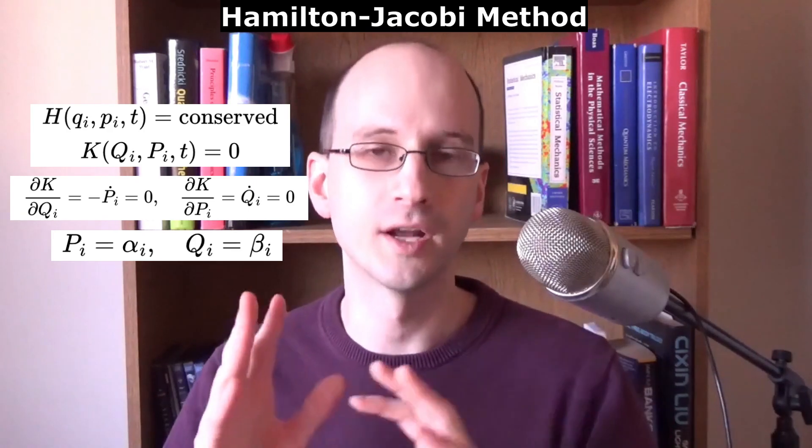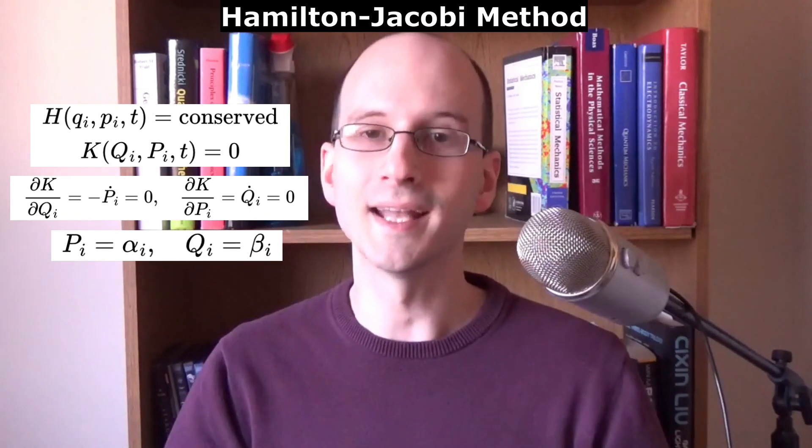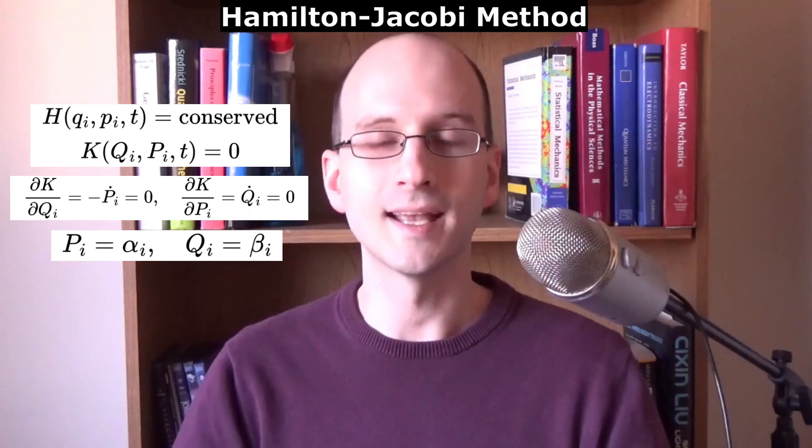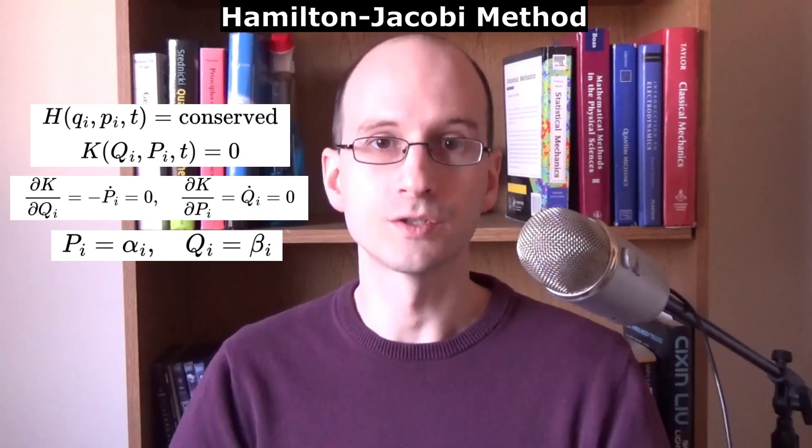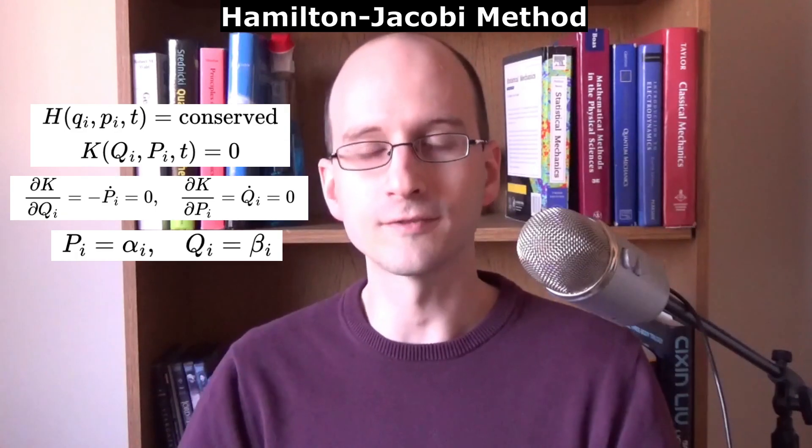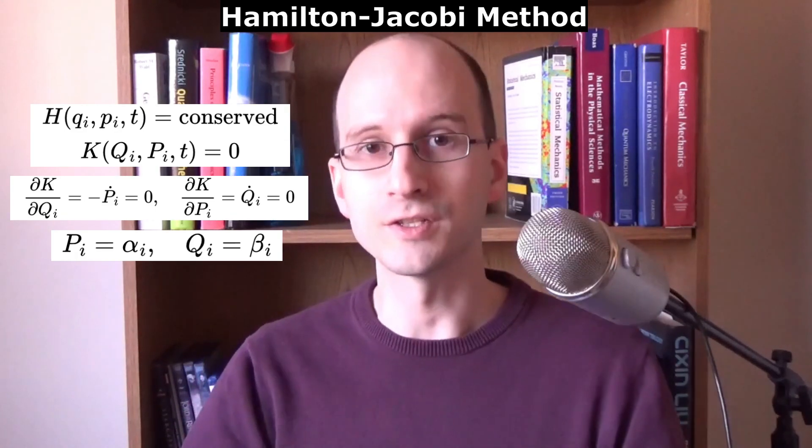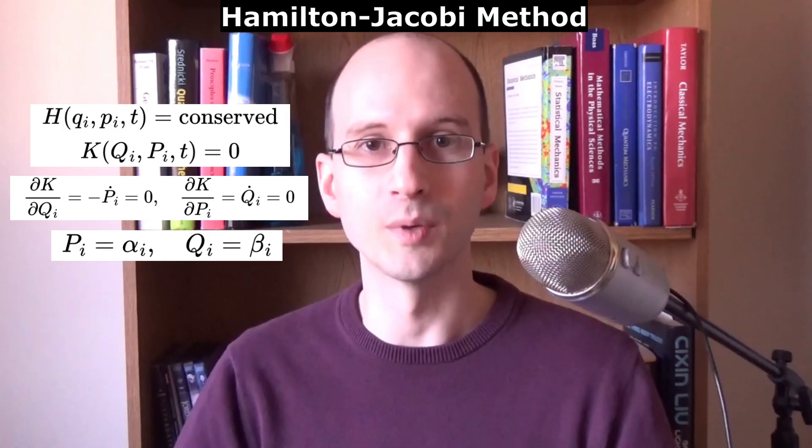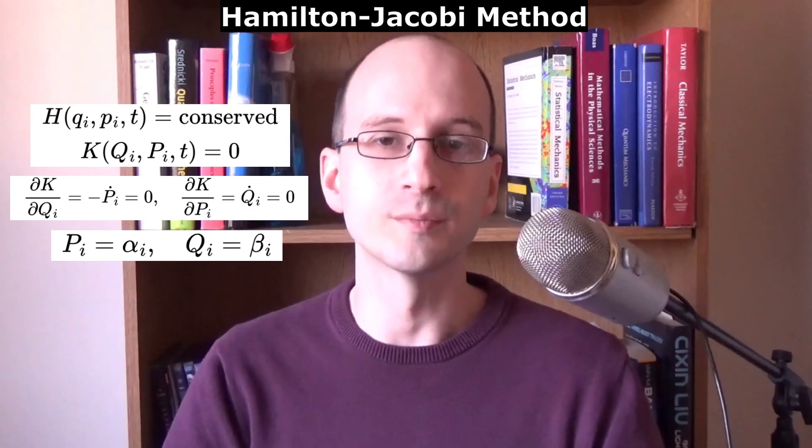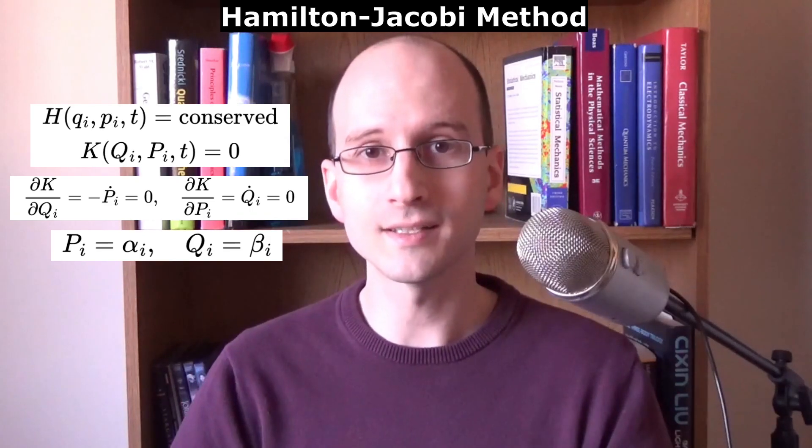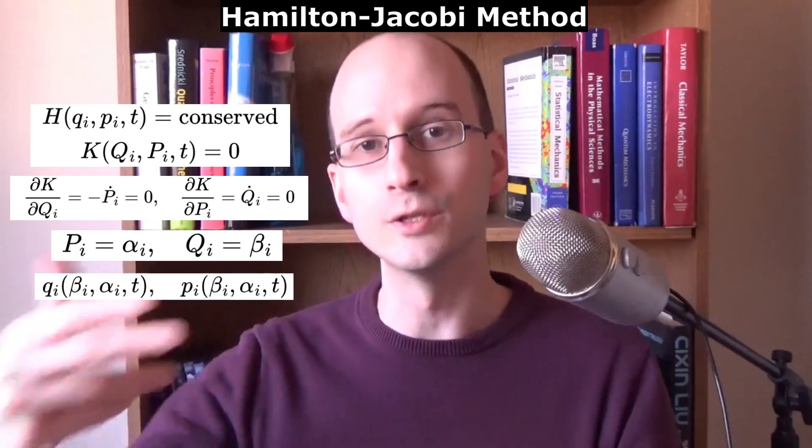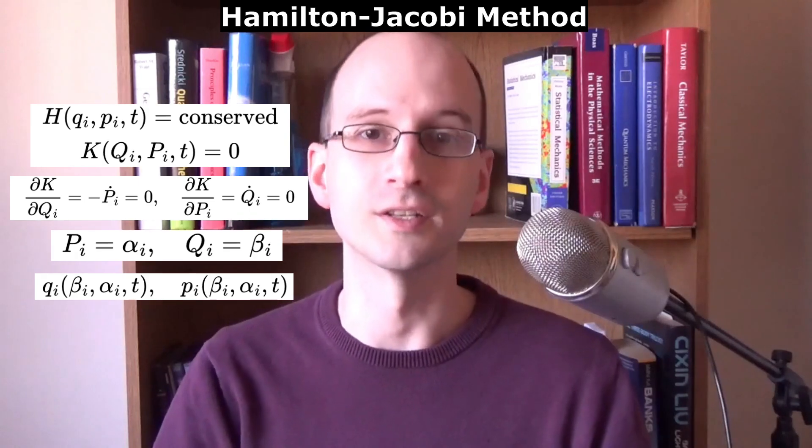Ever since episode one of this series, we've been talking about how generalized coordinates, the q's, don't have to be position. They can be any combination of scalar properties of this system. Speed, frequency, energy, anything. So therefore, a system with a conserved Hamiltonian and n degrees of freedom has two n constants which fulfill the requirements of canonical coordinates and momenta. Because the Hamilton equations of motion are trivial with these constants, the solution to the system is expressing the coordinates that do change in terms of the constant coordinates that don't.